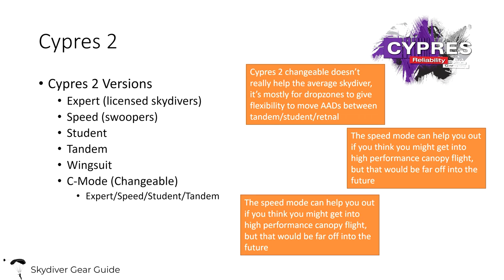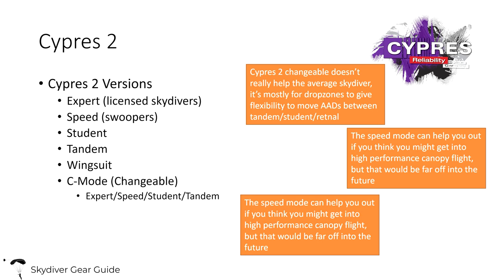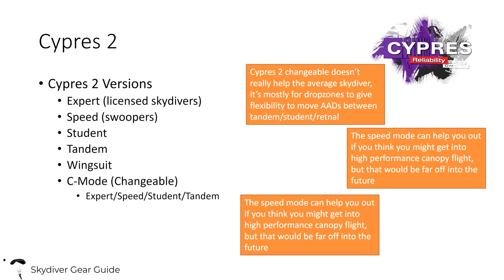The Cypress 2 from Airtek is the current model. You can get specific modes such as the expert mode — which is what most licensed skydivers would get, even with just 26 jumps. The student modes are for students, with higher firing altitudes and lower activation speeds. There's also a speed mode for high performance canopy flying, a student mode for AFF or coaching students, and a tandem mode. It's dangerous to jump an inappropriate mode because the firing altitudes would be different.